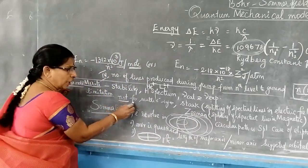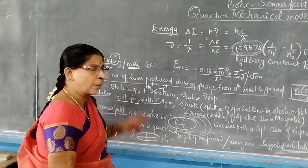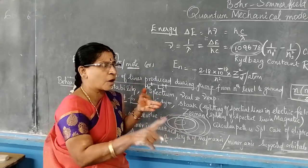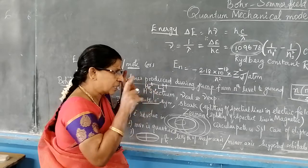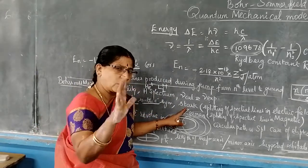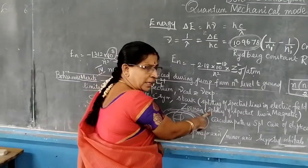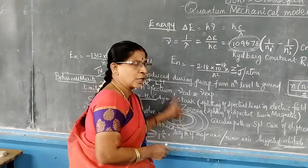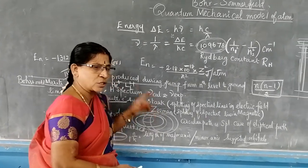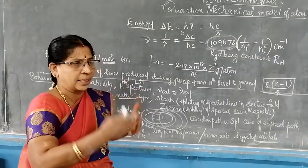Limitations: Bohr's model could not explain multi-electron systems — systems with more than one electron — nor their spectral lines. It also failed to explain two effects: the Stark effect and the Zeeman effect. The Stark effect is when spectral lines split into many lines in an electric field. The Zeeman effect is when spectral lines split further in a magnetic field. Bohr was not able to explain either. He also could not explain why atoms combine together to form compounds.